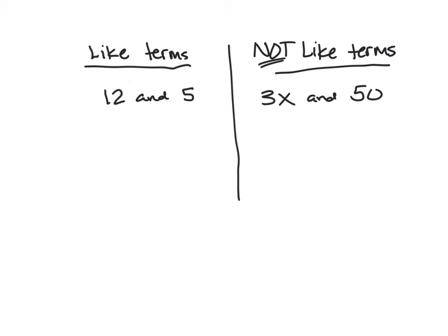Another set of like terms might be 4y and 7y — same variable being multiplied by each coefficient, raised to the same power. If I had 4y plus 7y, I can put them together to have 11y's. What I cannot put together is 4y and 7x. These are not like terms because y is representing a different unknown number than x. I can't take 4 apples and 7 oranges and say I have 11 of the same thing.